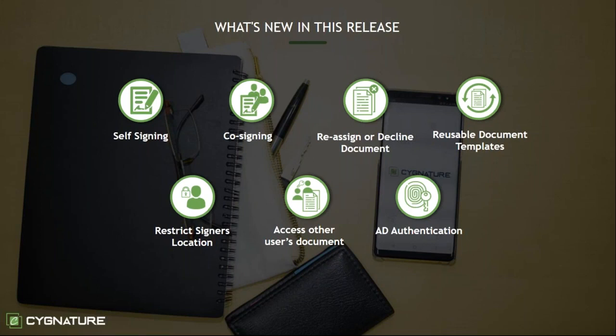The next new feature is co-signing. If you're sending a document to two signers and they both need to sign, one signer can log in and the other can sign the document from that first signer's account. The second signer just goes through an OTP process — they receive an OTP on their mobile number, enter it, and can then sign the document. You can also reassign or decline the document; if you don't want to sign it, you can reassign it to a colleague or team member.